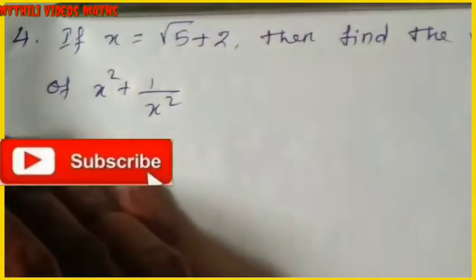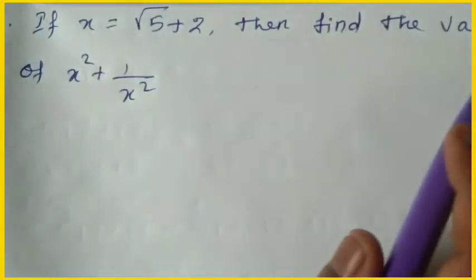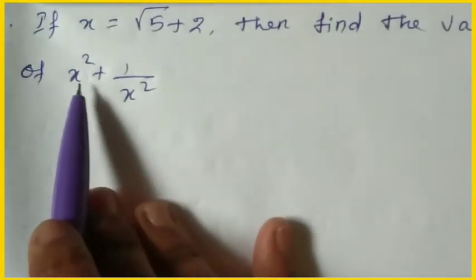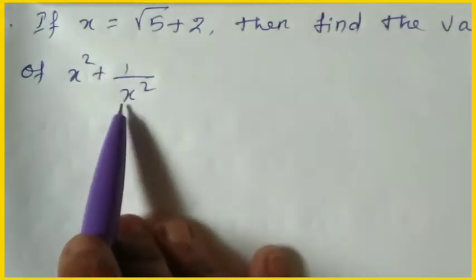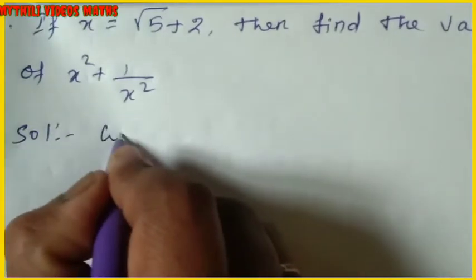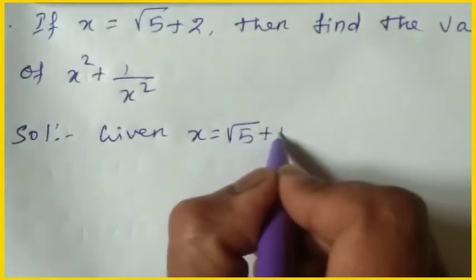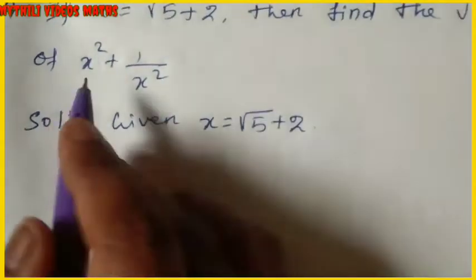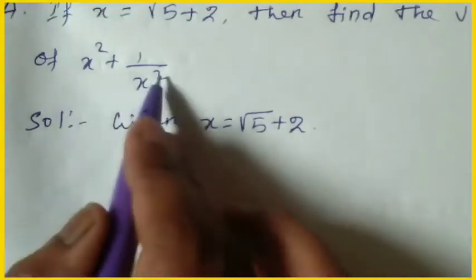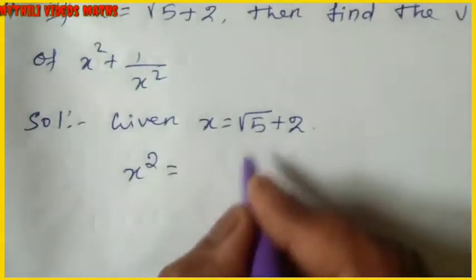Now we look at the fourth sum: if x = √5 + 2, find the value of x² + 1/x². For this, first we find x² separately, then find 1/x² separately, and finally add both.